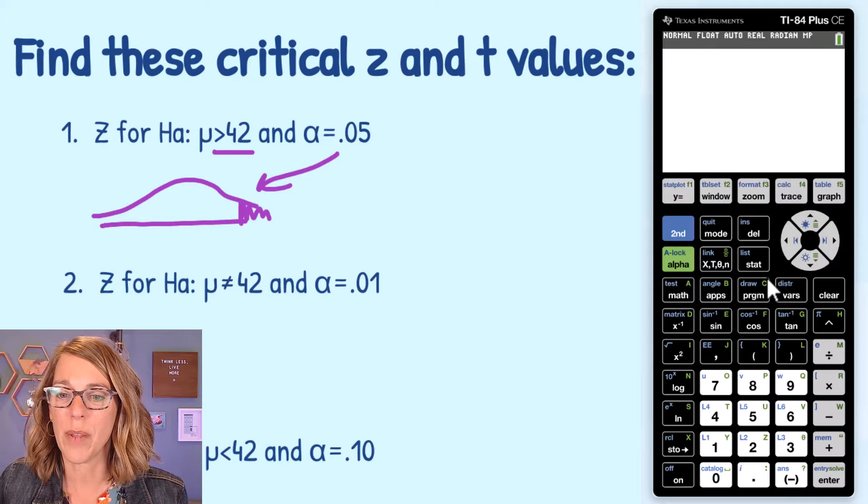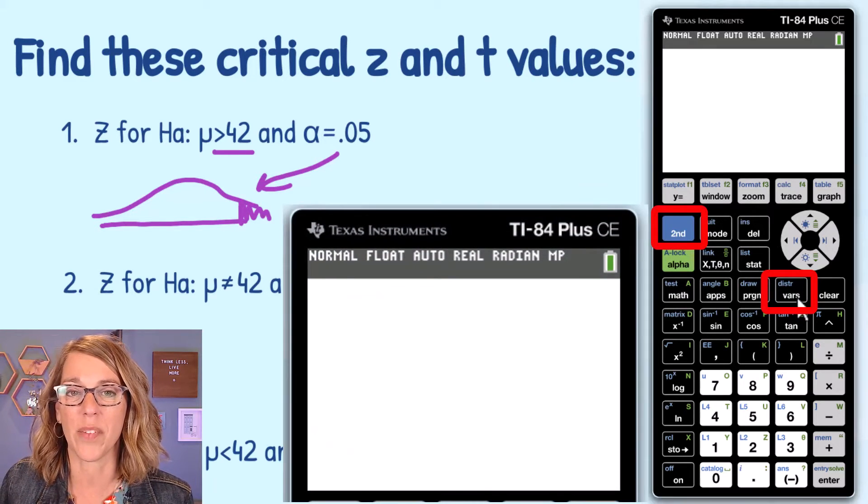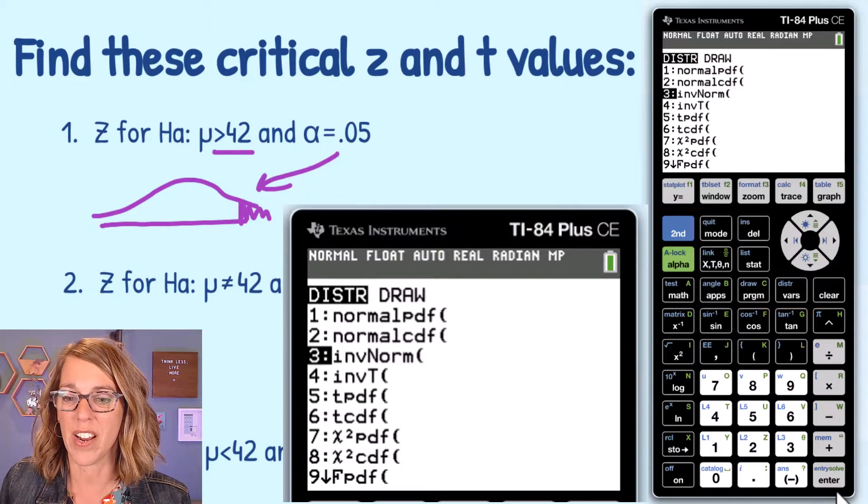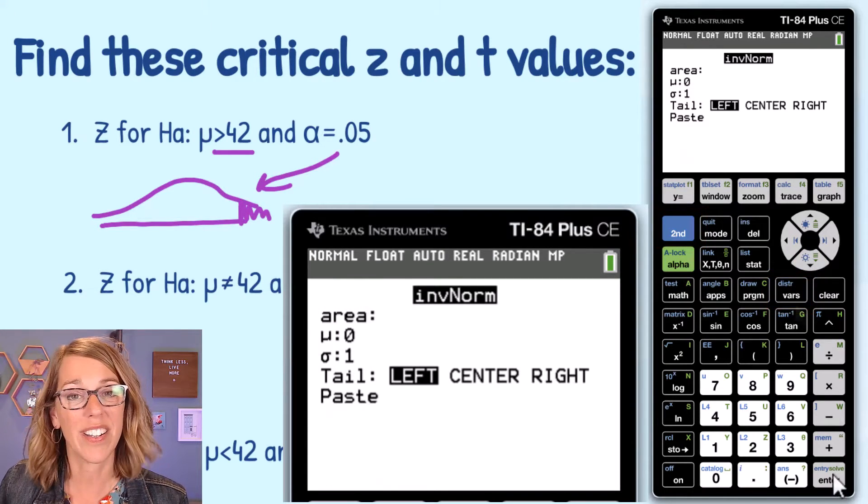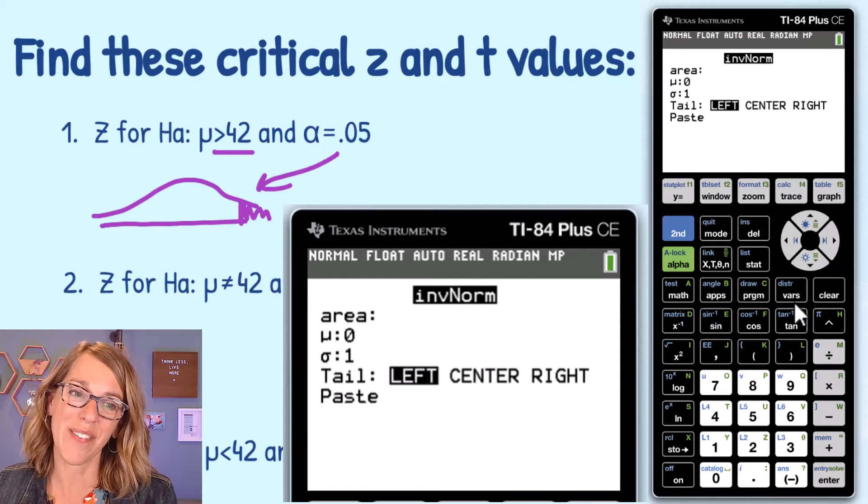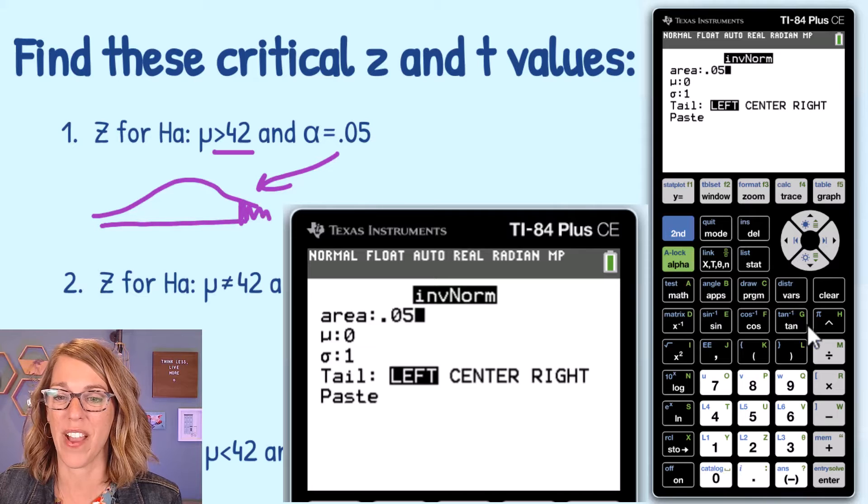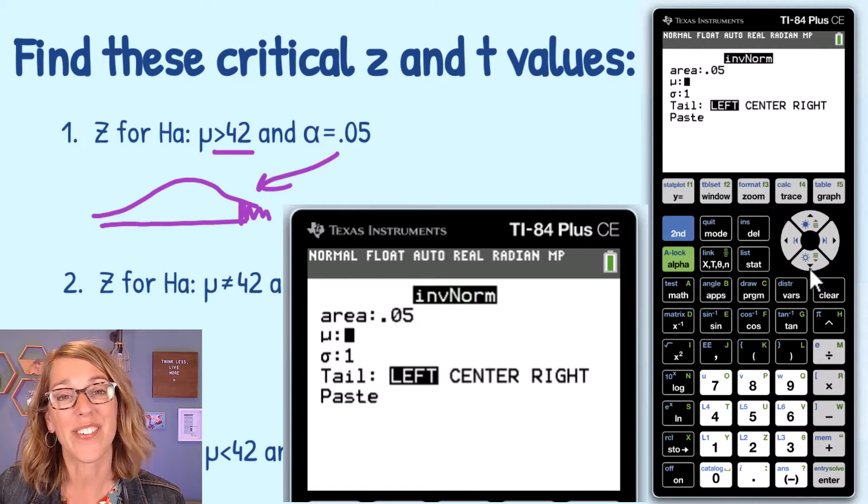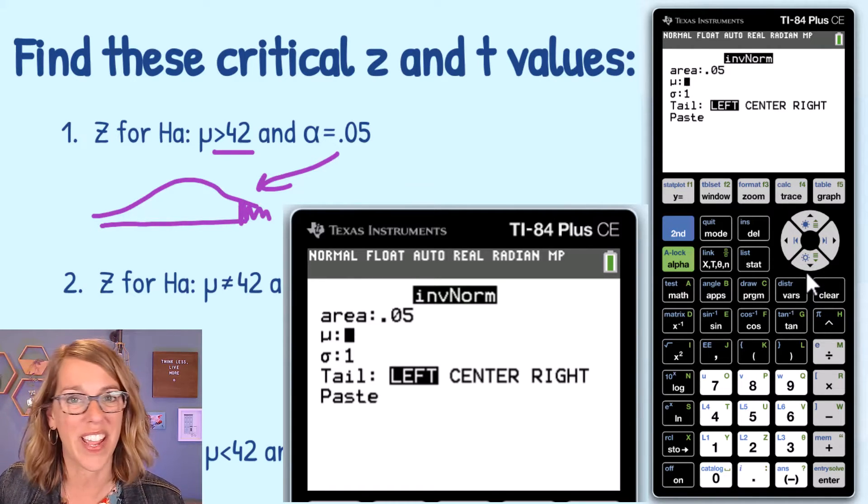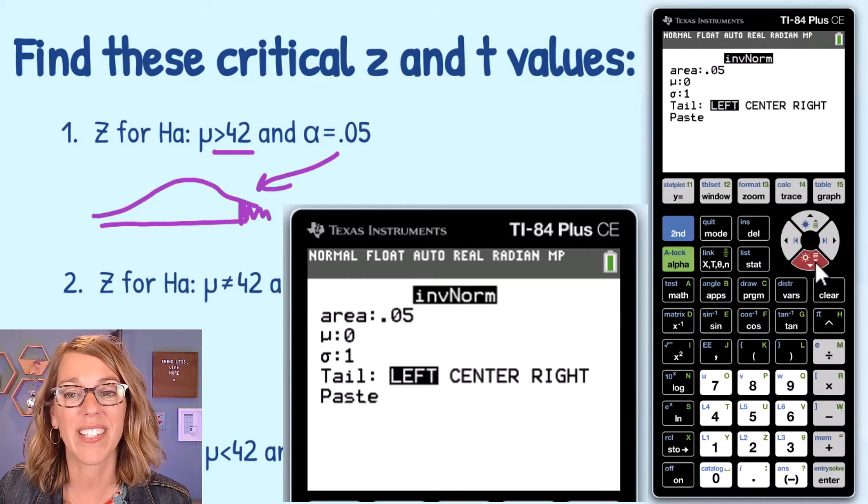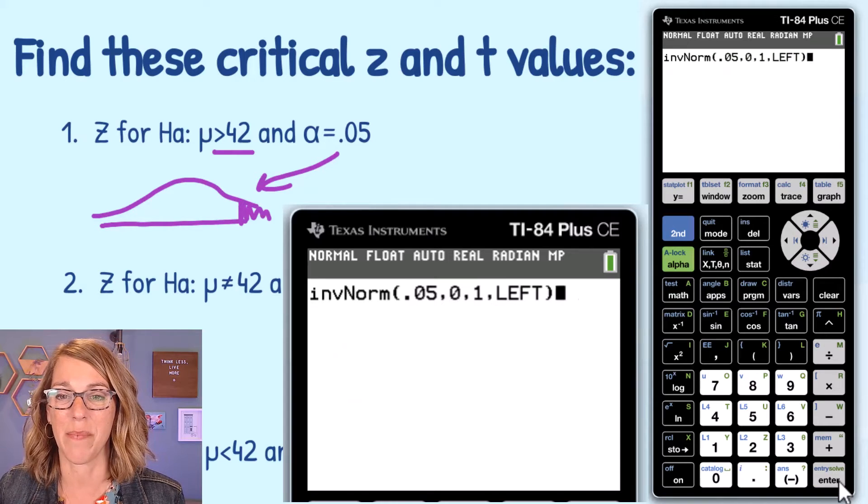For this one, I'm going to go into my distribution menu. So second followed by distribution. I'm looking for inverse norm. I'm going to arrow down to that and then hit enter. It asks me for that area, which is the area in my tail. So I'm going to go ahead and put 0.05. I do want the standard normal distribution, so mu is 0 and the standard deviation of 1 is perfect. I'm going to go ahead and leave this on left and then paste.